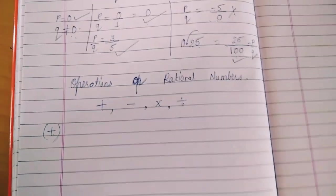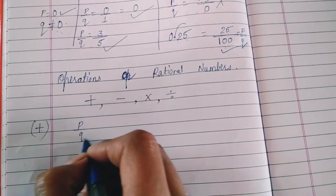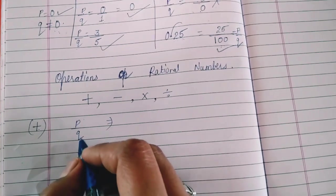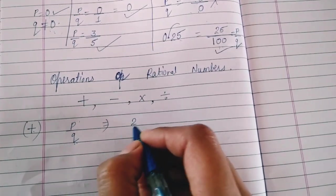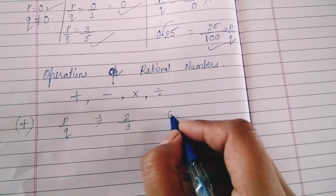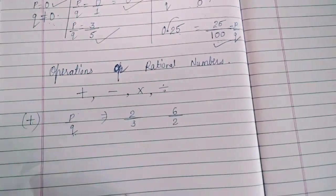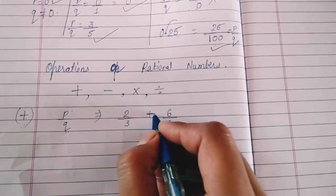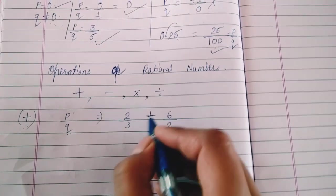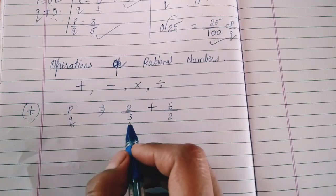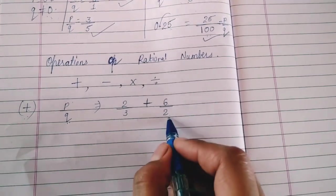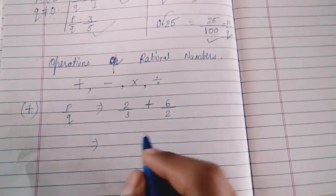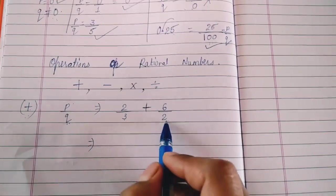We know a rational number is in the form of p upon q. So simply we will add two rational numbers. We will apply addition to 2 upon 3 and 6 upon 2 — these are rational numbers since q is 3 and 2 respectively (not zero). Now we will simply solve the addition of two rational numbers.